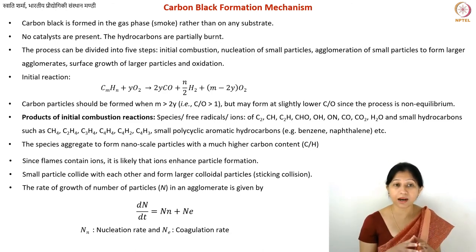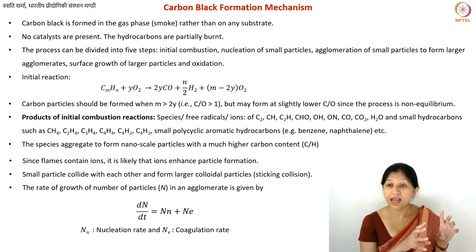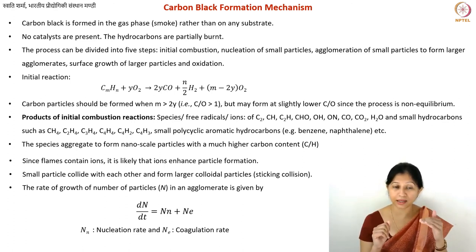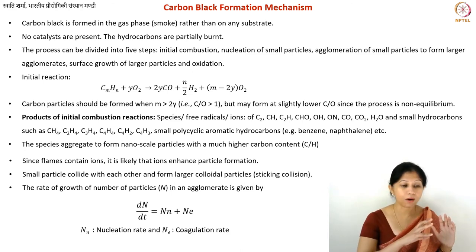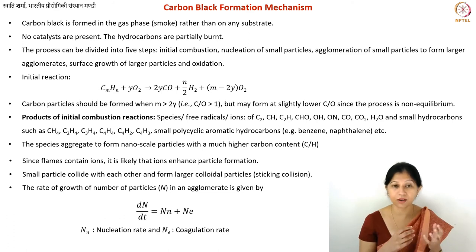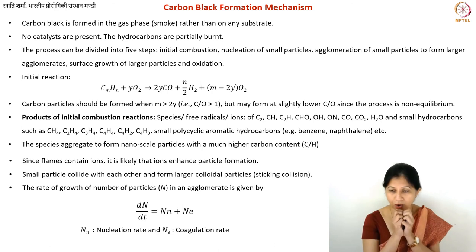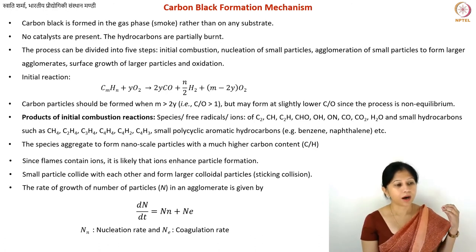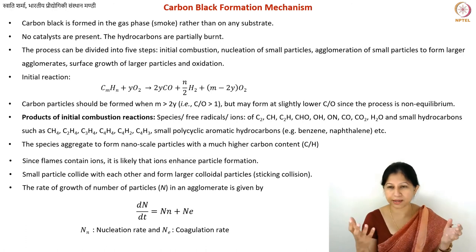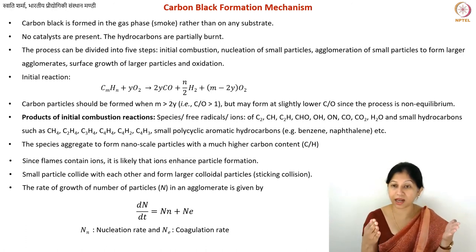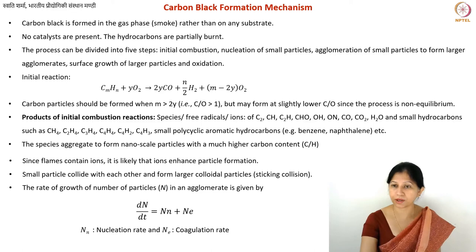The nucleation and growth of larger agglomerates can be represented by the relationship dN/dt = Nₙ + Nₑ, where you have the nucleation rate and coagulation rate. Coagulation is the coming together or agglomeration. Both nucleation of larger particles and the growth of larger particles are happening at the same time. This is the surface growth step — more and more particles start to attach. They stop at approximately one micrometer. The particles attach to gain stability, because these turbostratic particles have only short-range order and weak forces within the carbon sheets, making individual carbon black nanoparticles rather unstable.